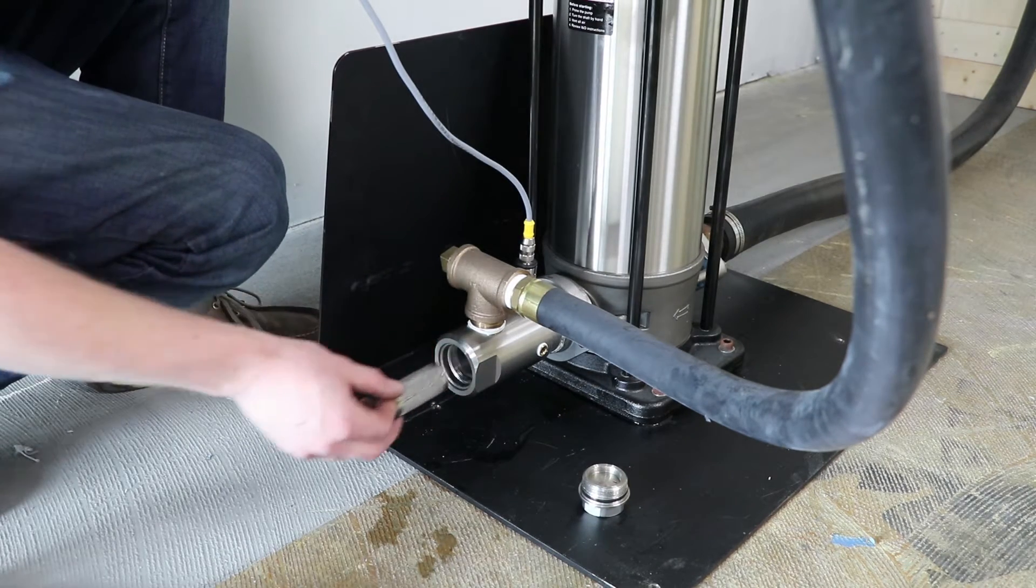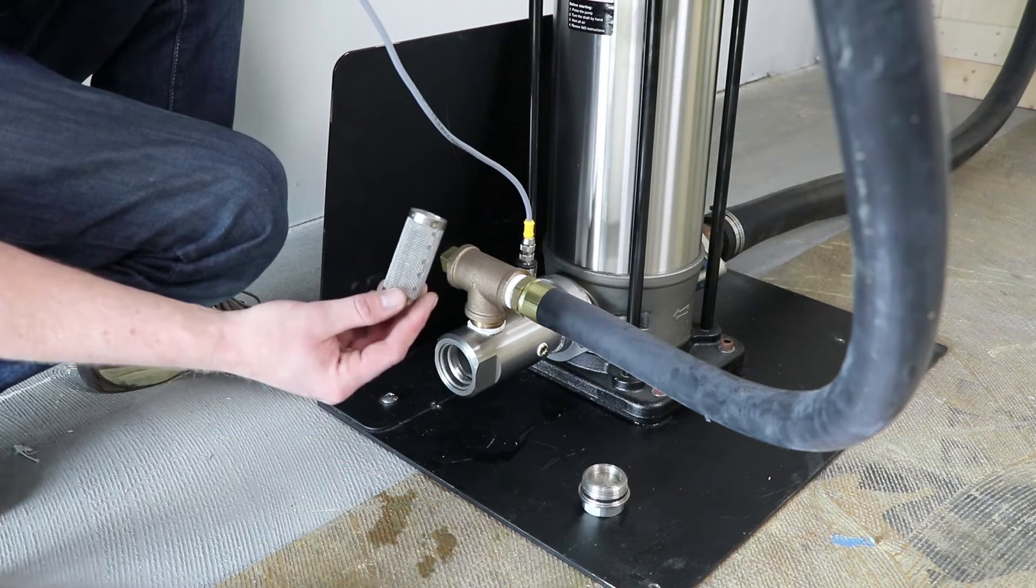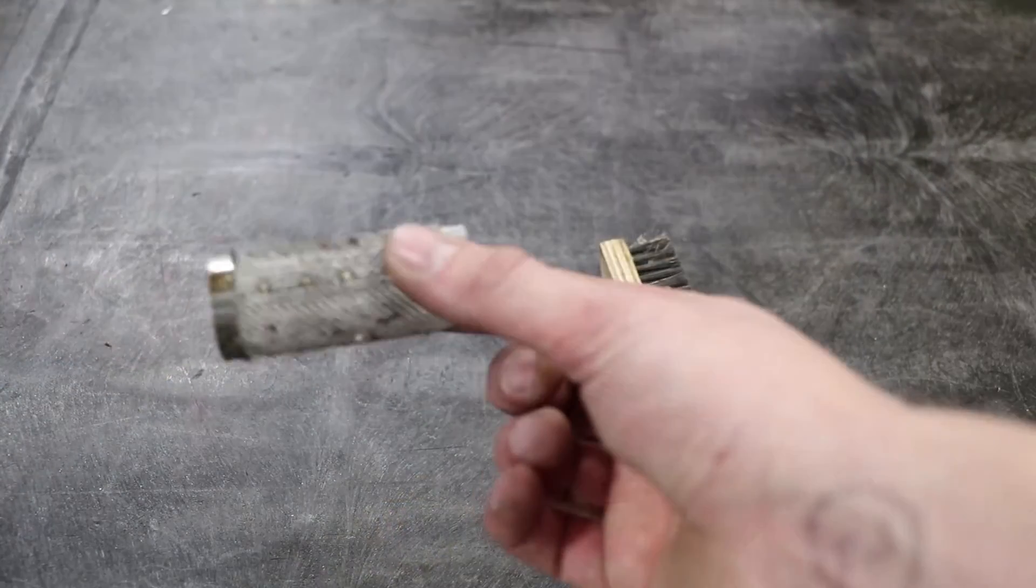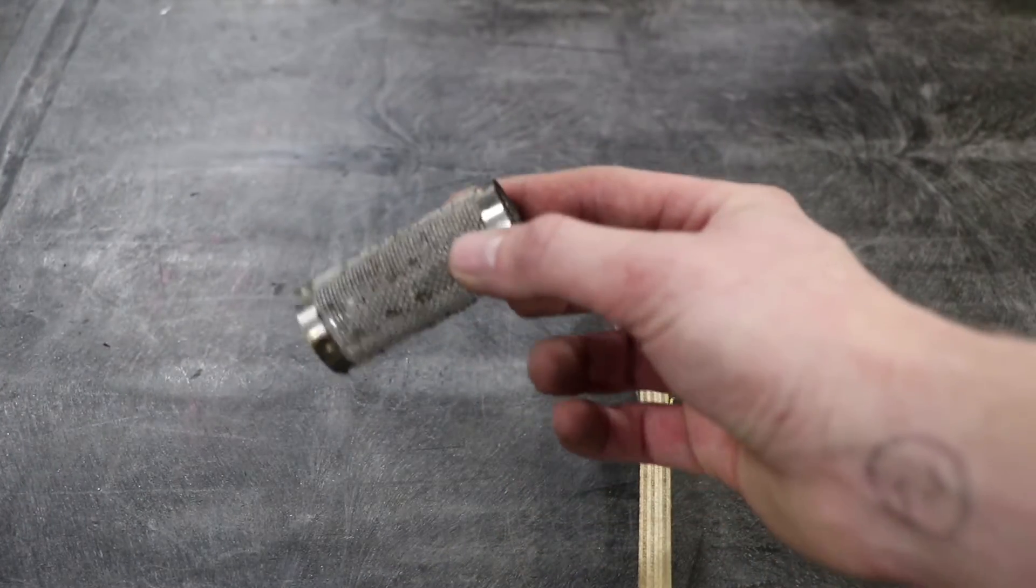Next we're going to remove the filter screen and clean it using a wire brush or with compressed air. Never clean your Y strainer screen with chemical.